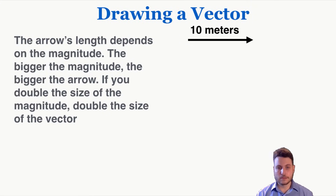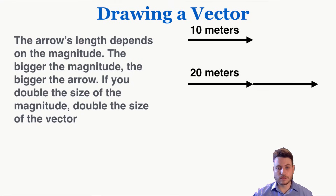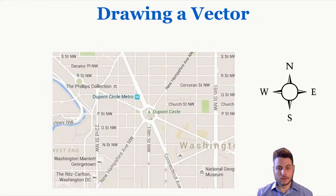The arrow's length depends on the magnitude. The bigger the magnitude, the bigger the arrow, and if you double the size of the magnitude you double the size of the vector as well. So if this is 10 meters and we want to draw a 20 meter vector, we need to draw an arrow that's exactly twice as big as that original arrow.